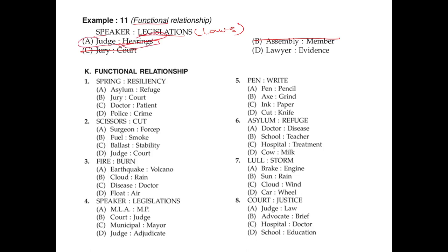Spring is an object in a car and it has resiliency, so resiliency is a quality of the spring — it gives stability. Islam is an environment where people take protection. House and refuge: refuge means asking for protection, but it has nothing to do with being a characteristic or quality. Patient and crime are also not a quality, so we only have option A as our right answer.